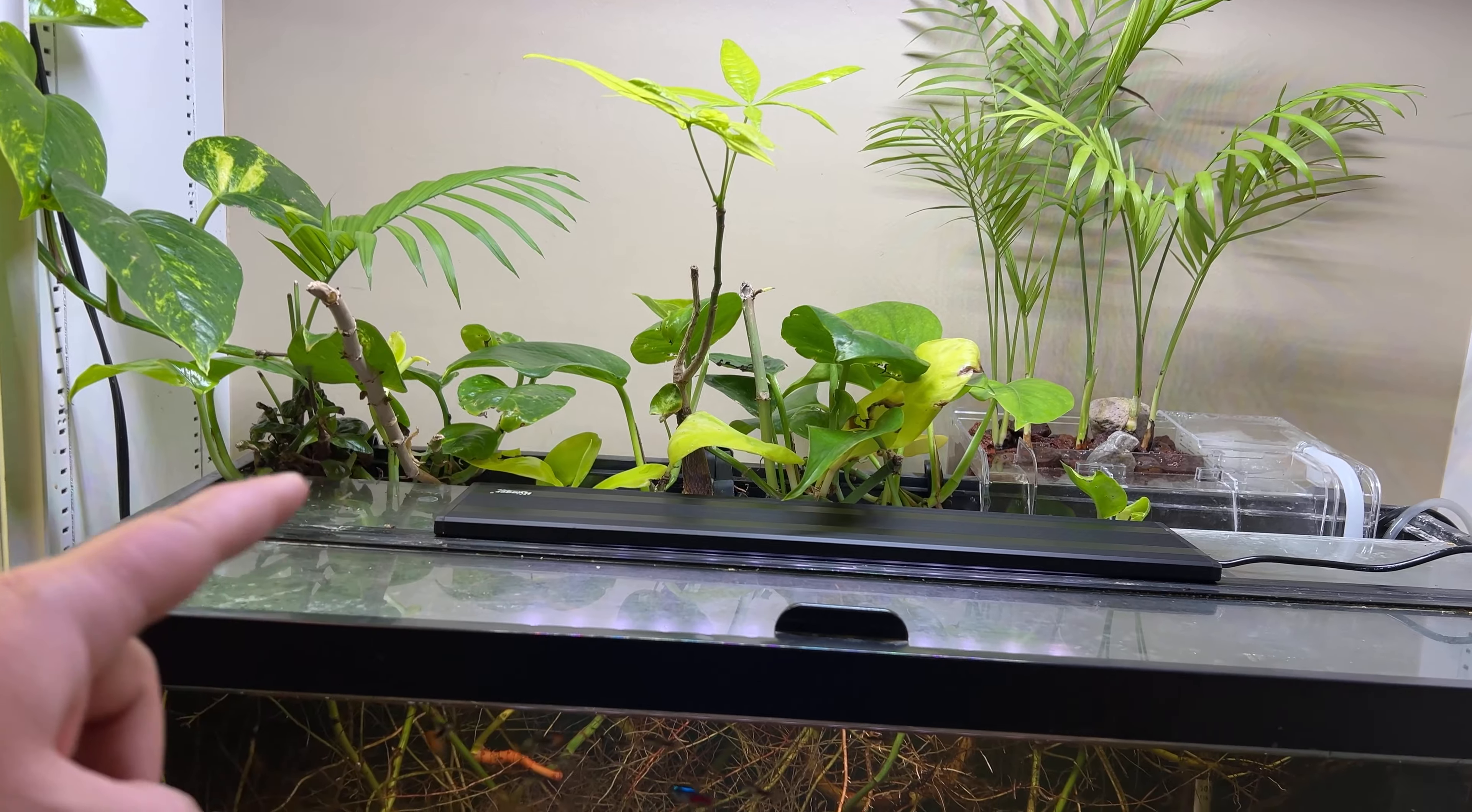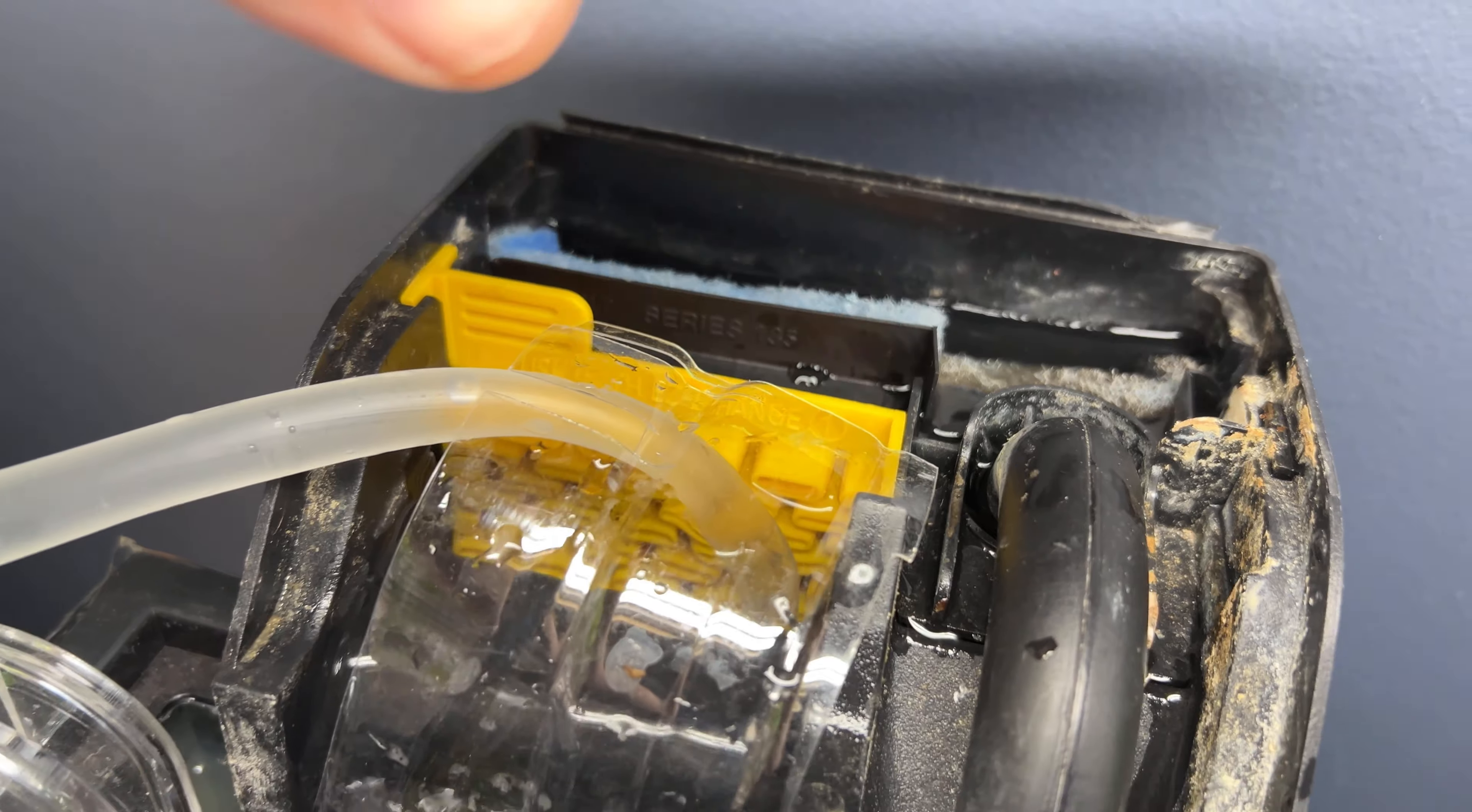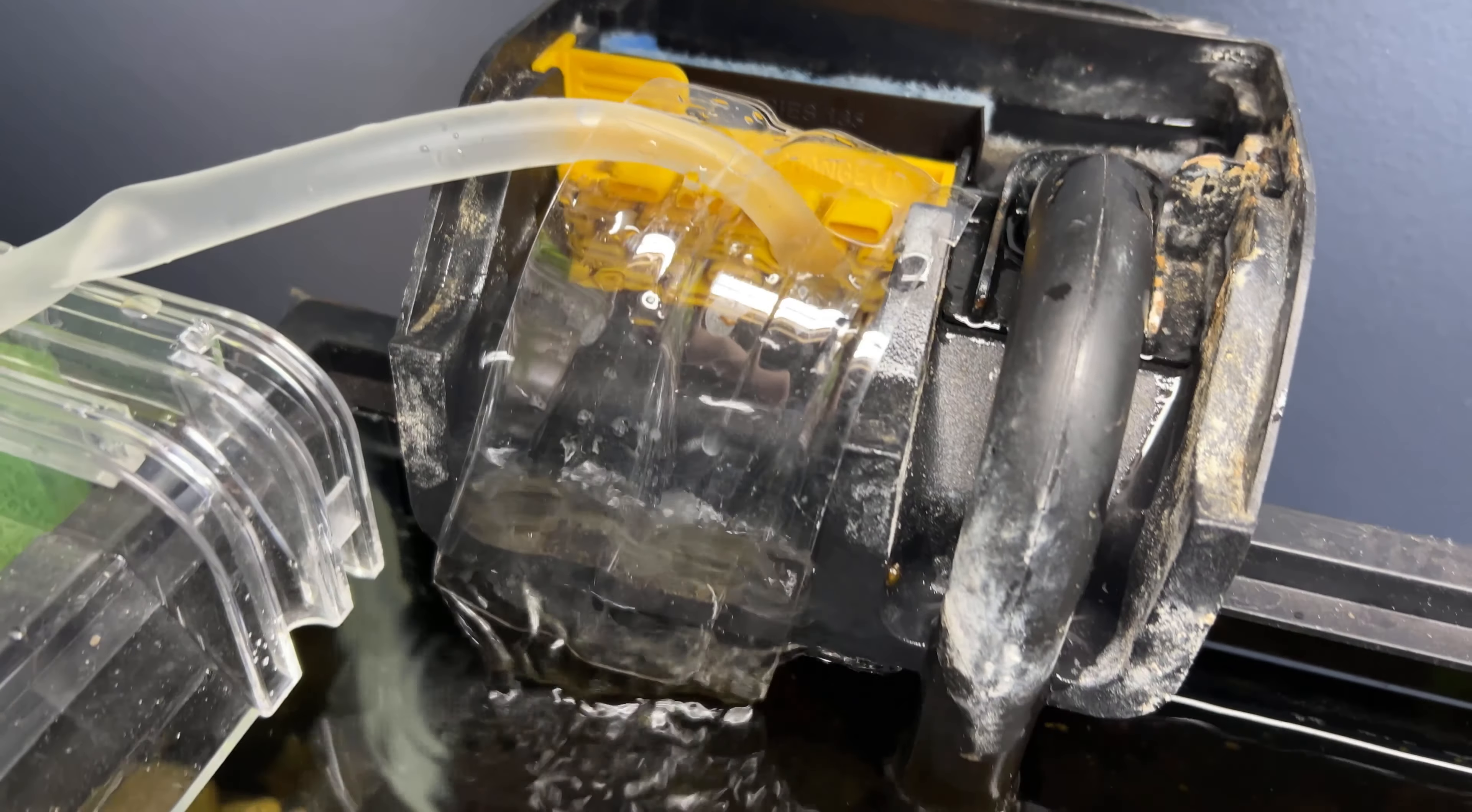Now I'm setting this up on an existing tank that already has the under-gravel filter installed, so there's only so much detail I can really show you, but hopefully this is sufficient. But after all of the tubes are connected, we now hook up the air pump and we have water flow. And again, a slow steady water flow is the objective for this filter.